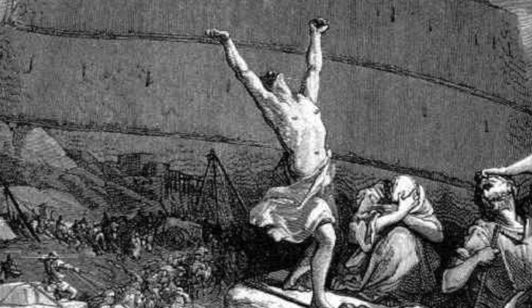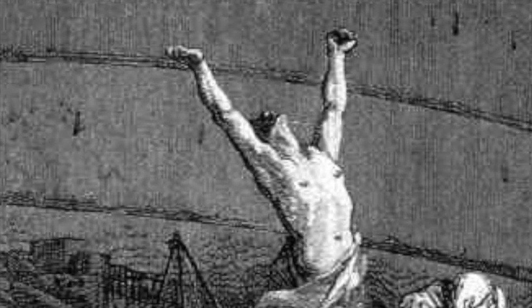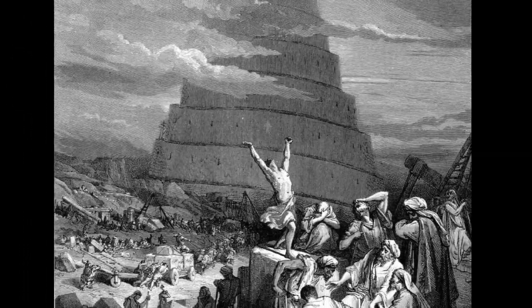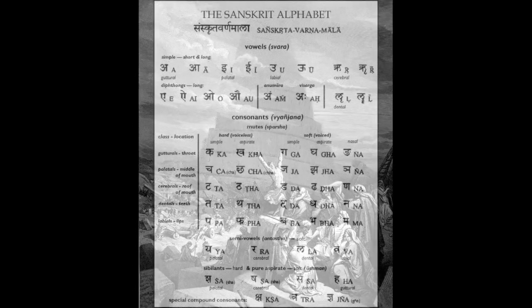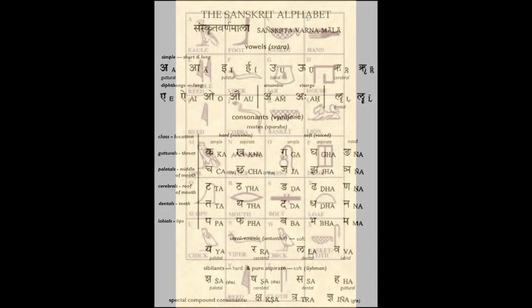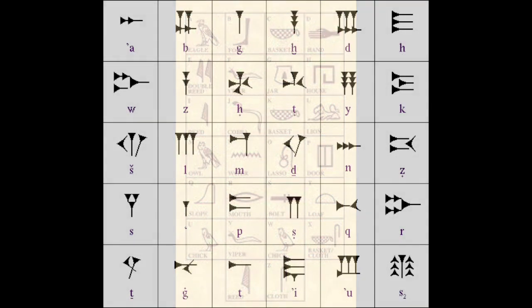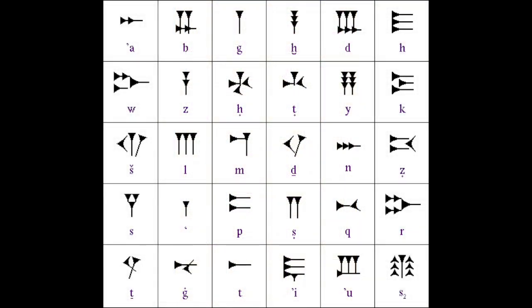In Genesis we are told of the building of the Tower of Babel and of the subsequent confusion of the tongues. This mythology establishes the division of the alphabet into languages to the east of Babylon with the 50 letters of Indus Sanskrit and to the west with the 27 monoliteral hieroglyphics of Egypt.